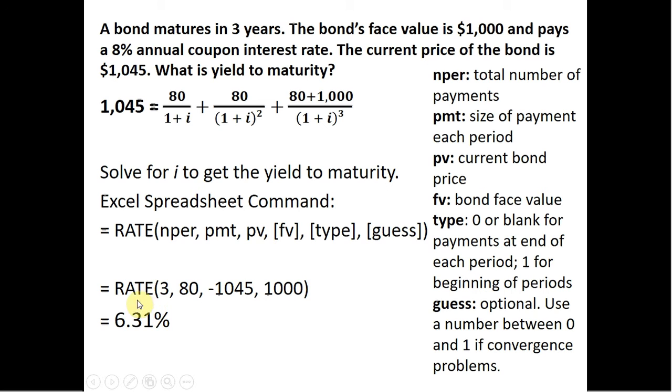So in Excel, for our problem, I just put in the following. Three, again, is the number of payments. 80 is the coupon interest payment. In terms of the bond's current price, we're going to put in minus here. The idea is that as an investor, you are paying out $1,045. So we put in a minus there for the present value. And the future value or the face value of the bond is $1,000, as I mentioned before.